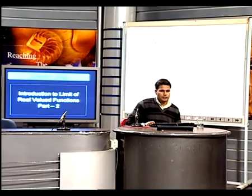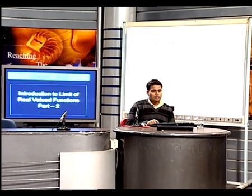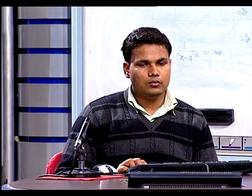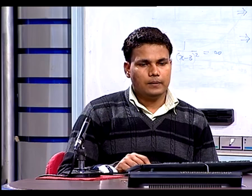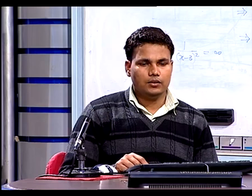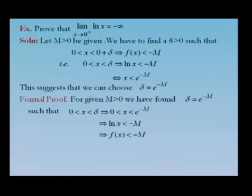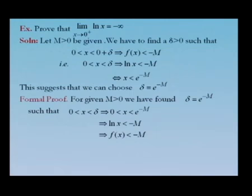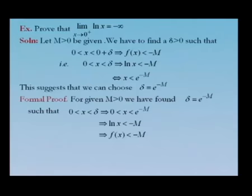Consider the function f(x) = ln x. Let M > 0 be given. We have to find δ > 0 such that when 0 < x < δ, f(x) < −M. That is, x < δ implies ln x < −M, which is true if and only if x < e^(−M). So this gives δ = e^(−M).